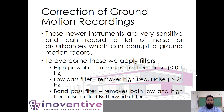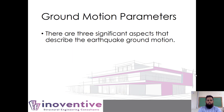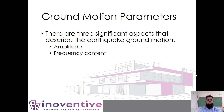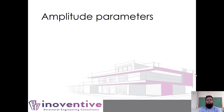There is a software for filtering earthquake records known as SeismosSignal. This software uses the Butterworth filter for filtering noise from earthquake ground motion. Research into ground motion parameters has shown that there are three significant aspects used to describe earthquake ground motion: amplitude, frequency, and duration.